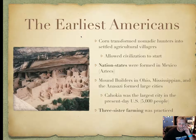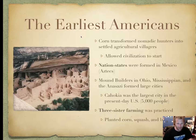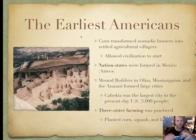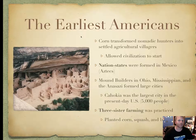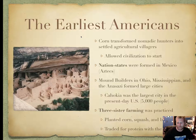They also practiced three sisters farming. You grow your corn, it goes up, and in the bottom you have the squash, which protects everything. Then the beans wrap around the corn stalks — so you have the three sisters: corn, squash, and beans. That's a lot of carbs and not a lot of protein, so they would trade with hunters on the plains who killed buffalo, because they needed protein and the hunters needed carbohydrates for a balanced diet.